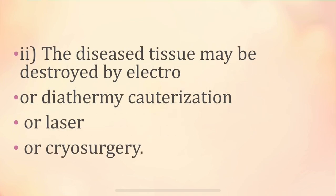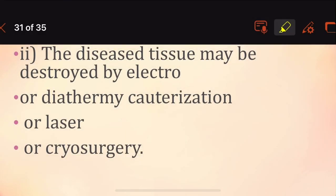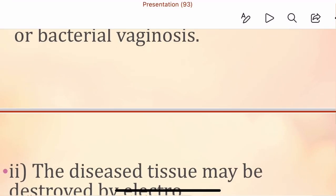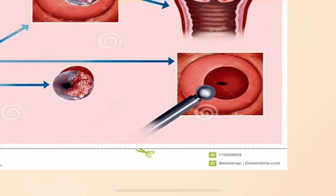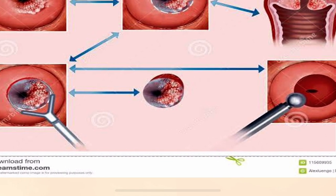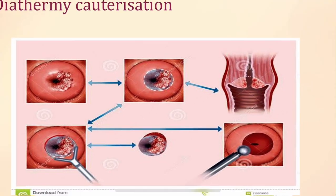The diseased tissue of the cervix is treated by electro-diathermy cauterization, laser, or cryosurgery. In diathermy cauterization, the top layers of cells are removed from the cervix using a heated ball-tipped probe, destroying the diseased tissue while leaving the healthy tissue.